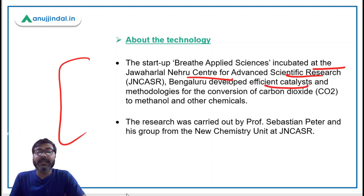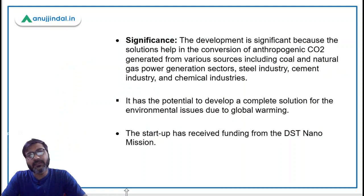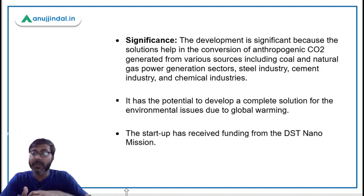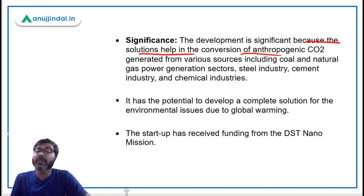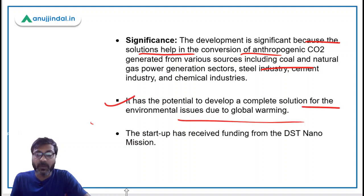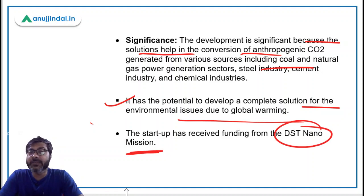The research was carried out by Professor Sebastian Peter and his group from the Jawaharlal Nehru Centre for Advanced Scientific Research. This development is significant because increasing carbon dioxide levels in our environment contribute to global climate change and global warming. The solution helps in the conversion of anthropogenic CO2 generated from various sources including coal and natural gas power generation. This startup has also received funding from the DST Nano Mission — a mission under the Department of Science and Technology.